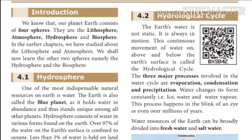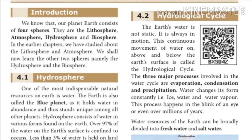The earth's water is not static — it is always in motion. This continuous movement of water on, above, and below the earth's surface is called the hydrological cycle. The three major processes involved in the water cycle are evaporation, condensation, and precipitation. Water changes its forms constantly — for example, ice, water, and water vapor. This process happens in the blink of an eye or even over millions of years.